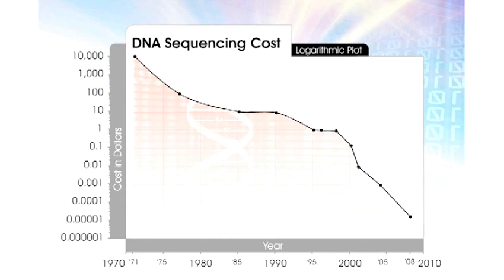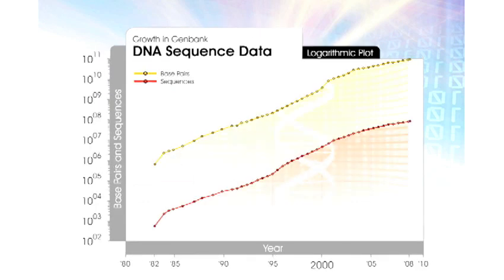This is a completely different example — this is not Moore's Law. The amount of DNA data we've sequenced has doubled every year. The cost has come down by half every year, and this has been a smooth progression since the beginning of the Genome Project. Halfway through the project, skeptics said this is not working out — you're halfway through the Genome Project and you've finished 1% of the project. But that was really right on schedule, because if you double 1% seven more times — which is exactly what happened — you get 100%, and the project was finished on time.